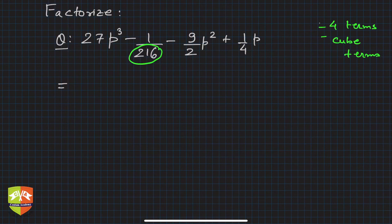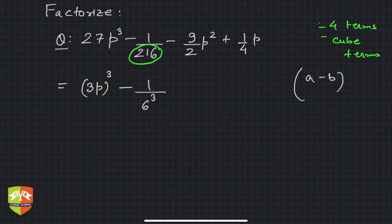So let's try and see whether it fits into our scheme. 27p³ can clearly be written as (3p)³, so the first term is tentatively achieved. 3p whole cubed. Now what is -1/216? That's -1/6³.